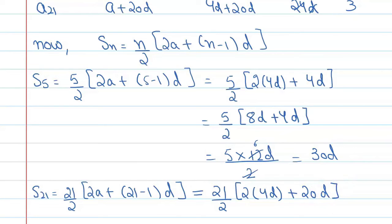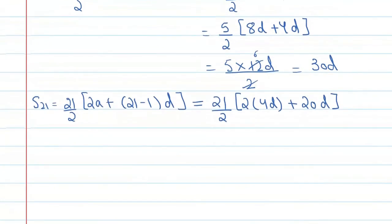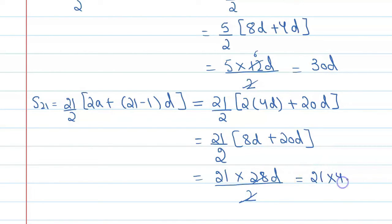After that, you can say this will become 21 upon 2, 2 into 4 that is 8d plus 20d. This will become 21 upon 2, this is 14d, so you can say 21 into 14, this is 14d.